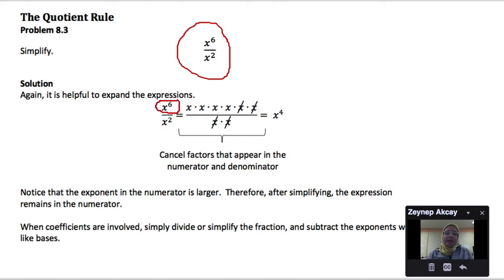Let's expand the numerator. x to the 6th can be expanded as 6 factors of x multiplied, and x squared can be expanded as 2 factors of x multiplied. So we can cancel out common factors.